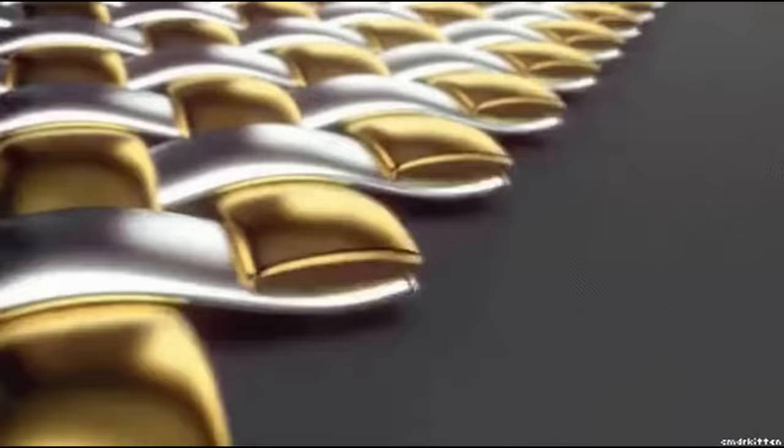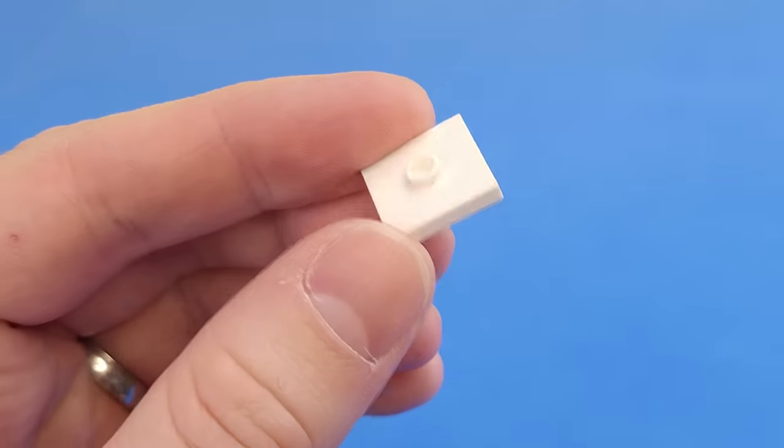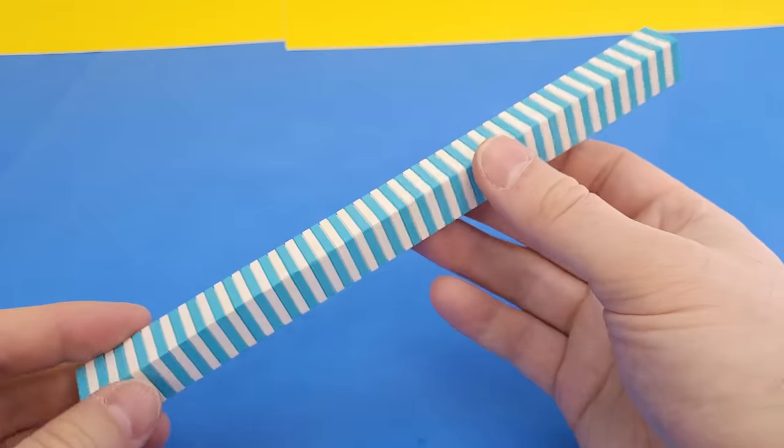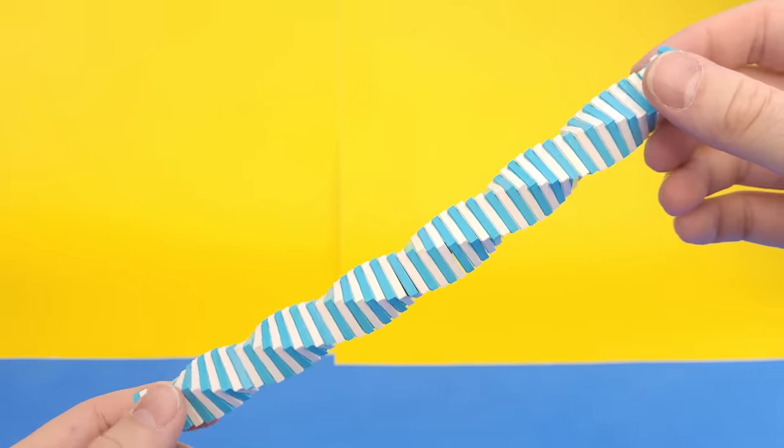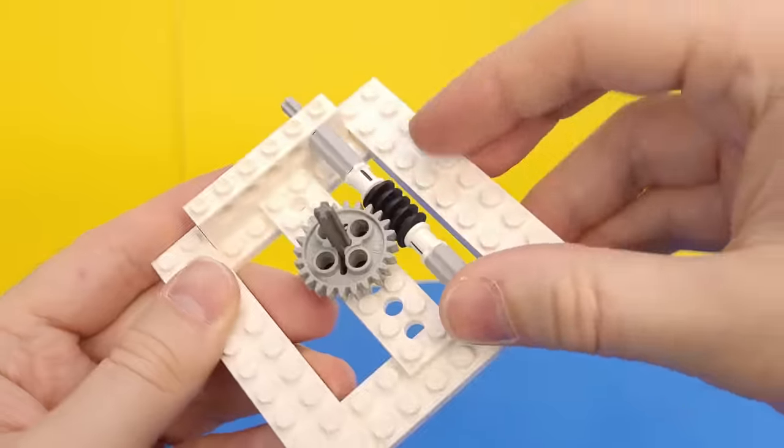One thing I've always found to be really cool and satisfying are patterns and optical illusions. So I collected a bunch of these jumper plates and twisted each one of them slightly to give the entire thing a spiral shape that looks pretty cool. But to make it even better, I decided to motorize it.